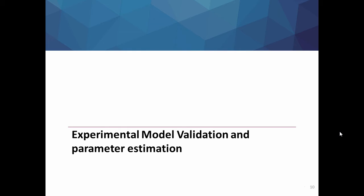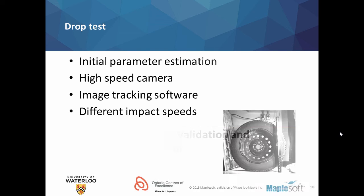To validate the model and to estimate the parameter values, we have used a drop test to perform initial parameter estimation and a vehicle measurement system implementation for rigorous parameter identification. In the drop test scenario, we have dropped a tire from different heights to simulate different impact speeds while monitoring the motion using a high-speed camera and image tracking software.